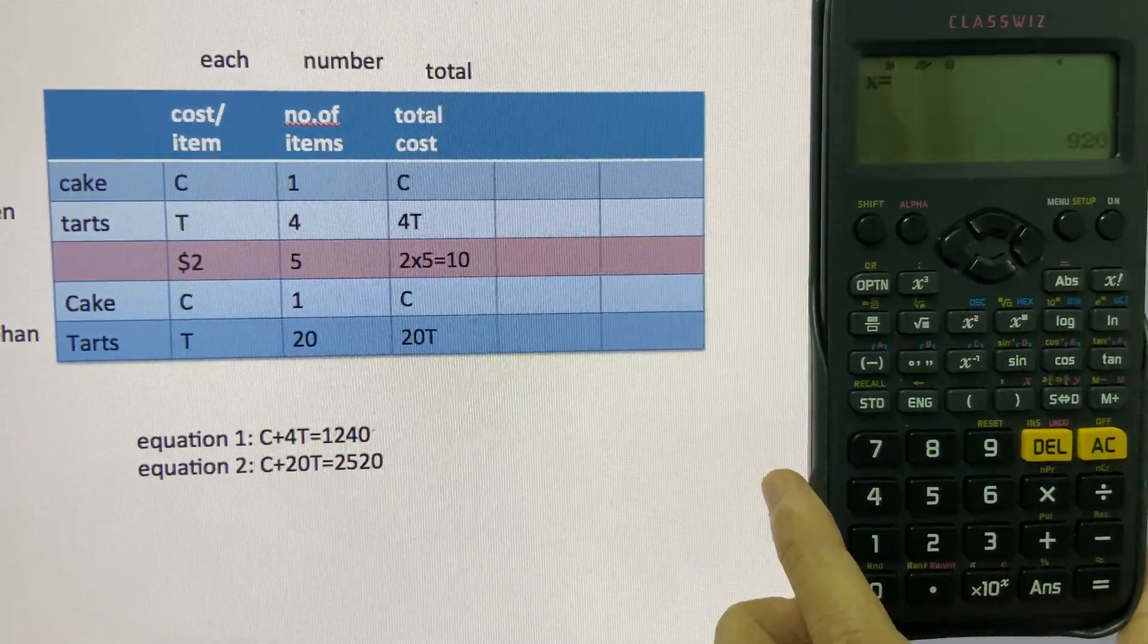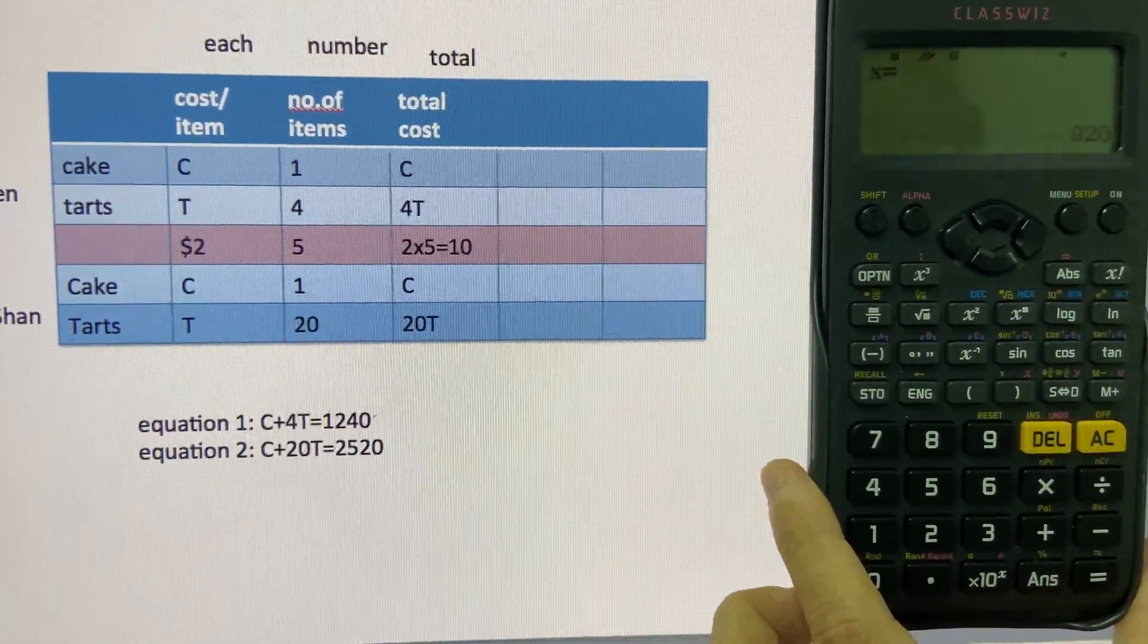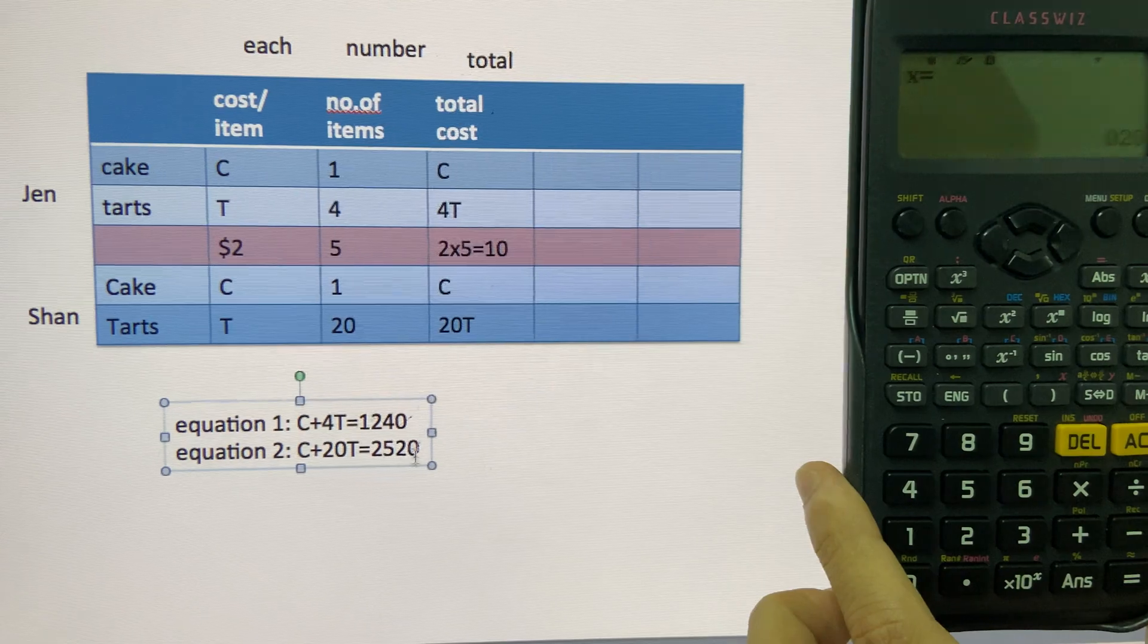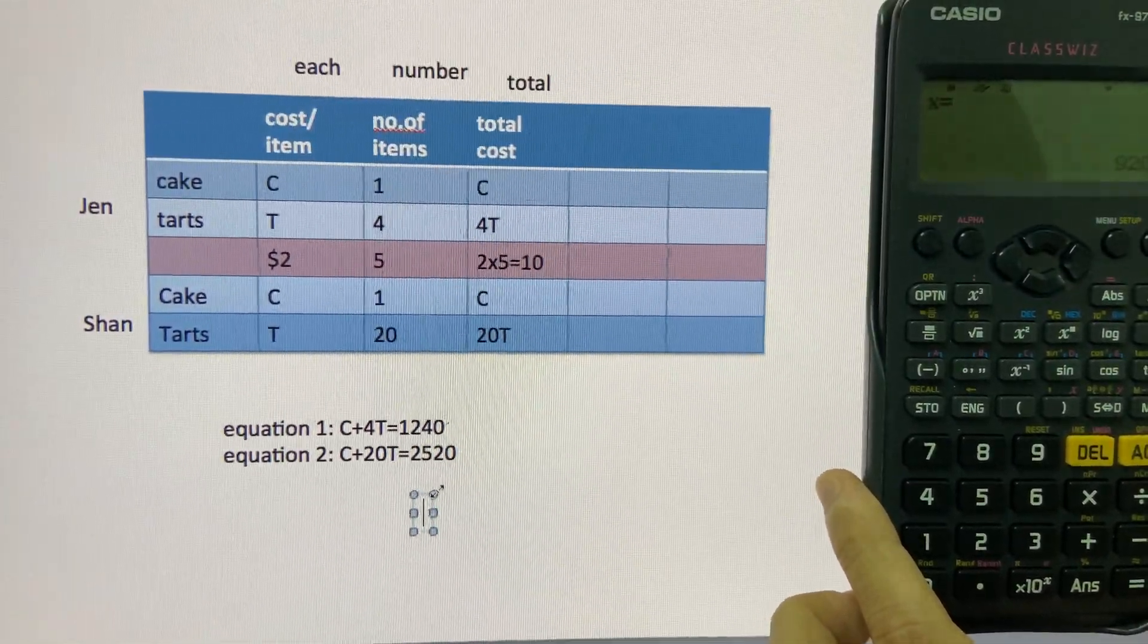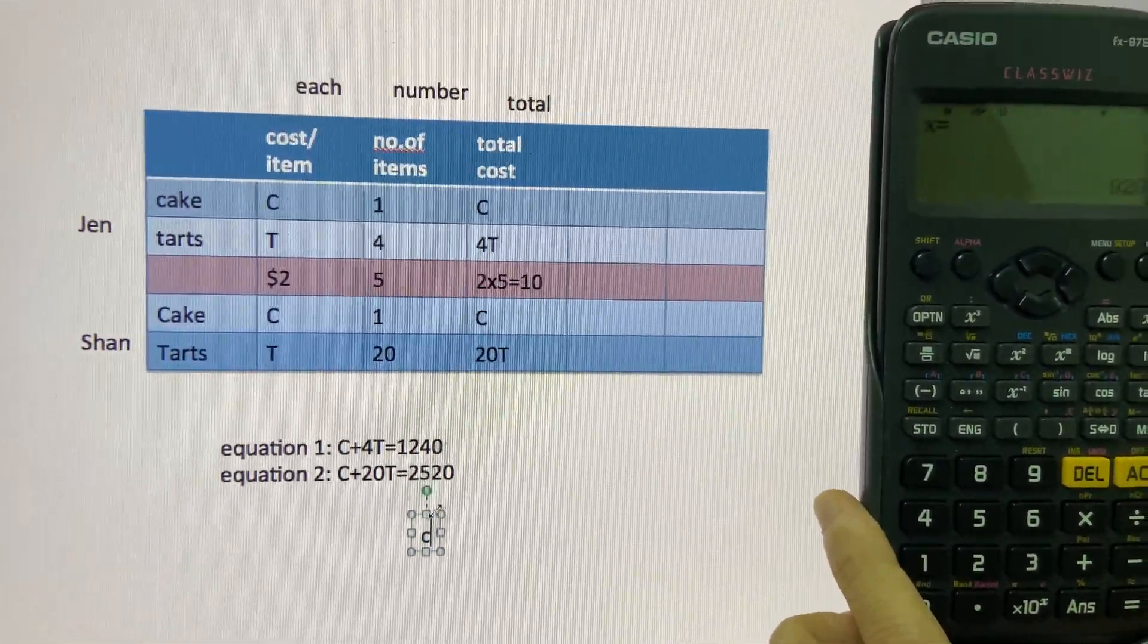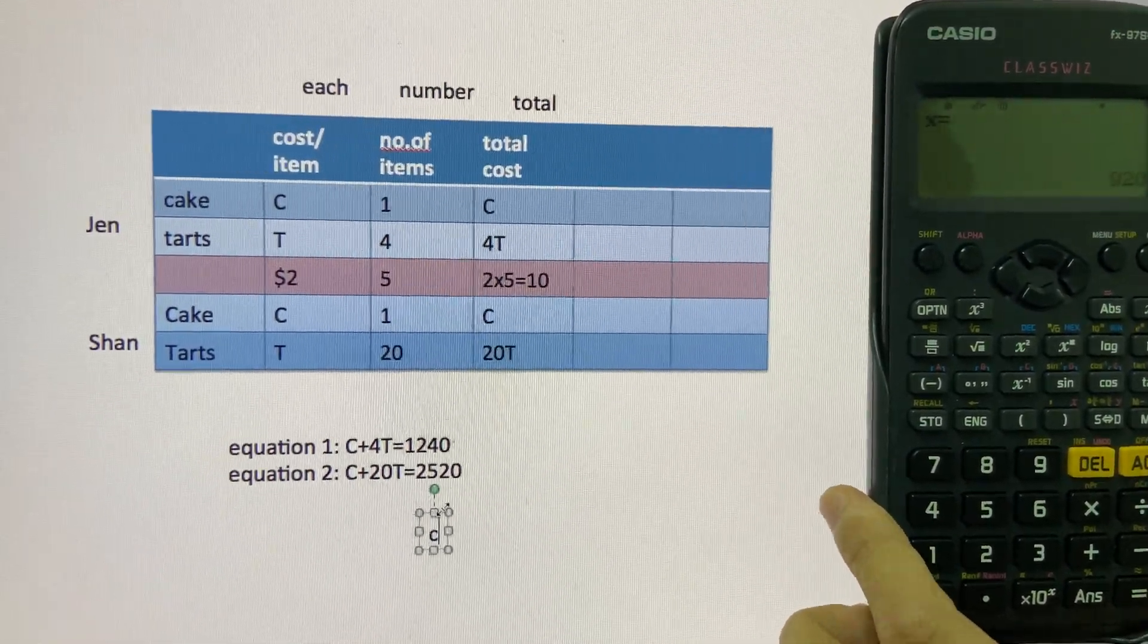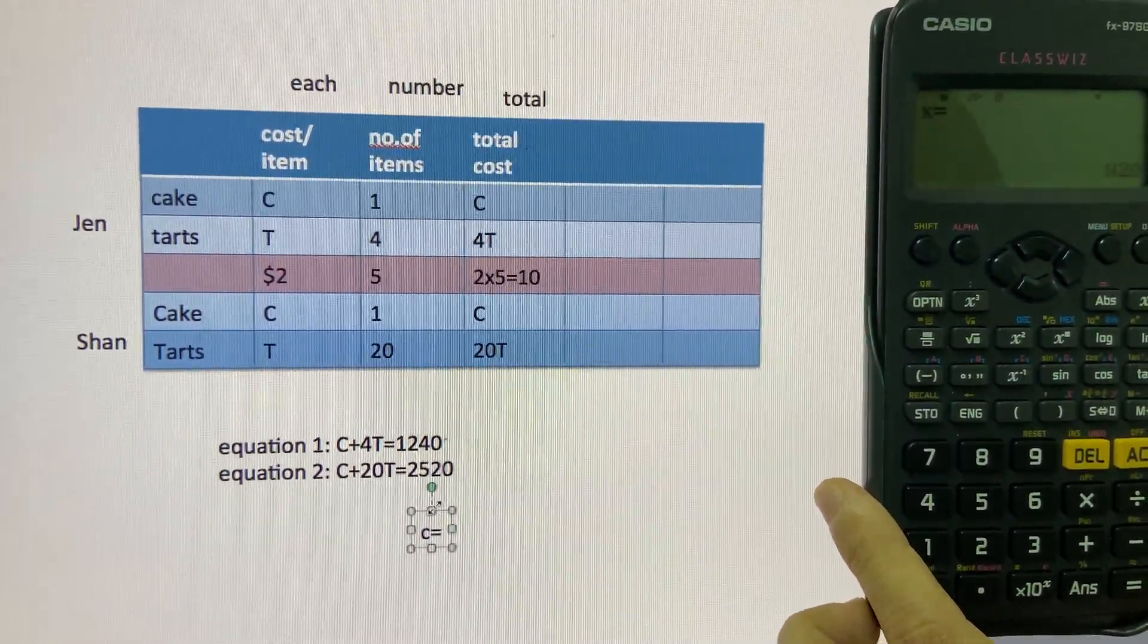So the calculator says X is equal to 920. X equals 920, that means our C here is 920. C is equal to 920.